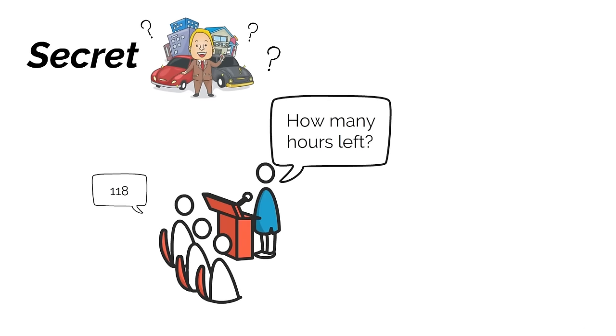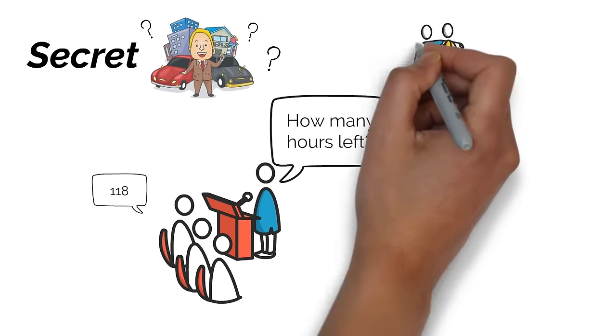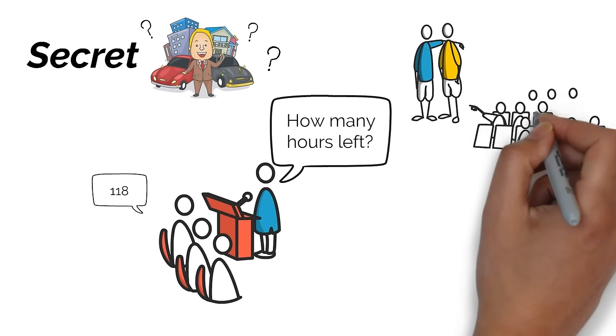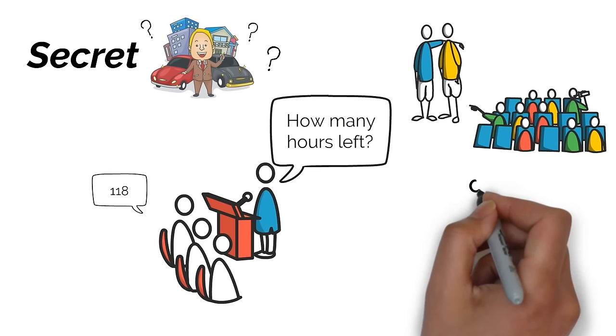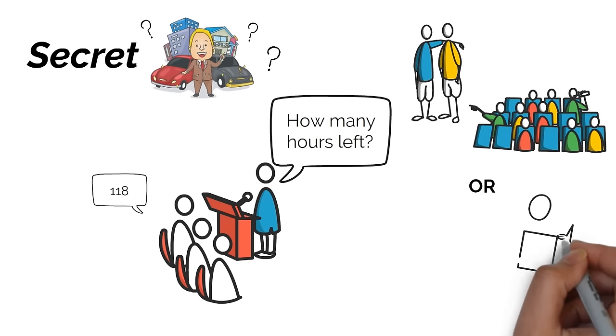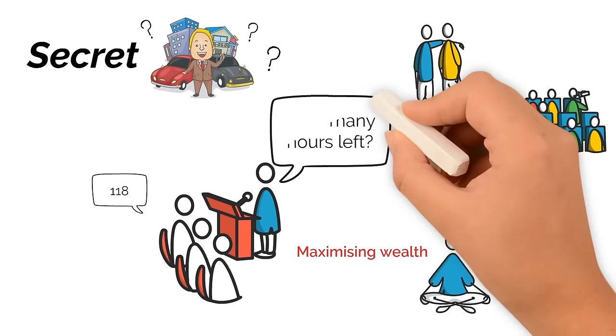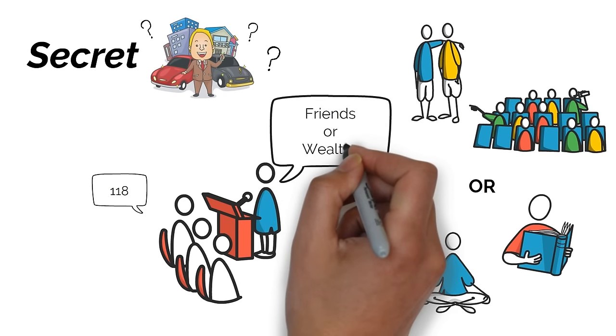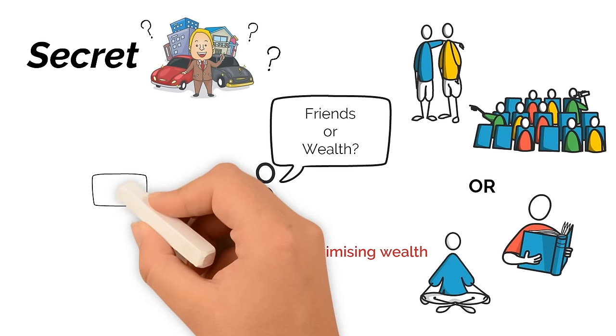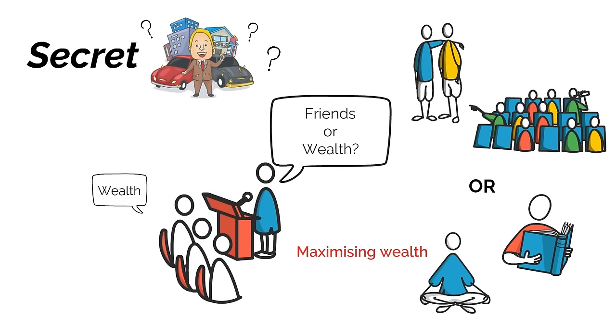The something else, you can spend it with your friends and watching movies and enjoy yourself, or you can spend it in your Swami Vivekananda single-minded pursuit of maximum wealth. So what do you want to spend it on? Your friends or to maximize wealth? Maximize wealth. Okay, so that's what I did.